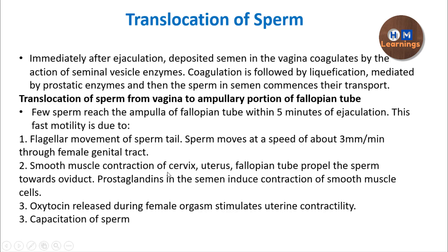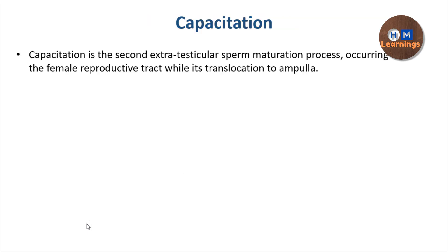The key carry-home message of this video is the capacitation of the sperm. During this translocation process, certain biochemical changes happen in the sperm itself, and these changes ultimately increase the sperm's motility, fertilizing capacity, and navigating power to reach and fertilize the ovum. Capacitation is a second extra-testicular sperm maturation process which occurs in the female reproductive tract during its translocation to the ampulla.